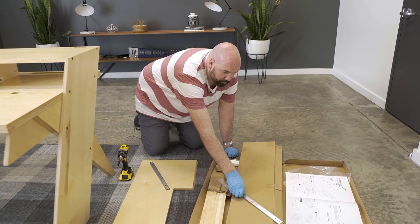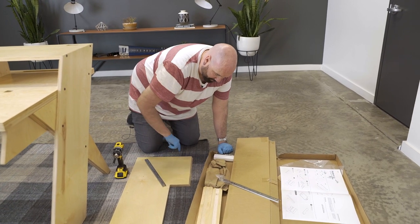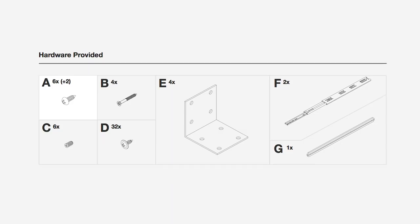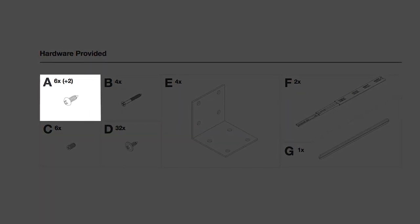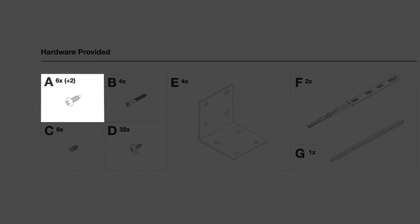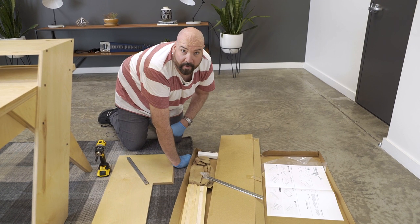So now we're going to take this part of the slide and put them on the edge on each side of the tray. Using the A screw, we give you two extra because these are really easy to strip but just be gentle and don't strip them.